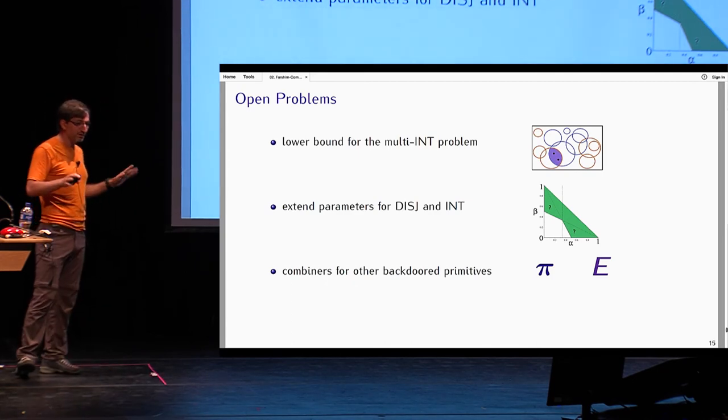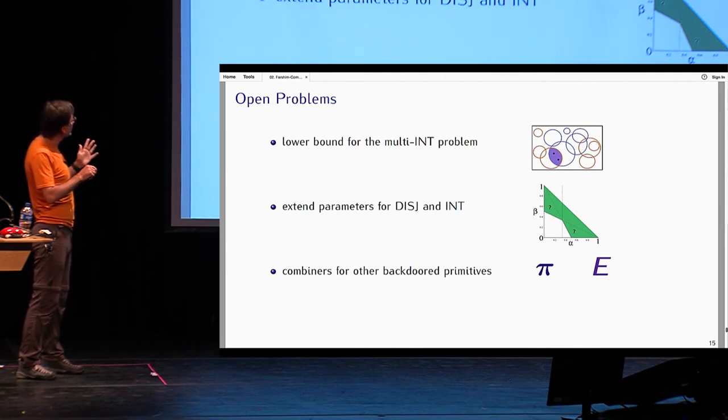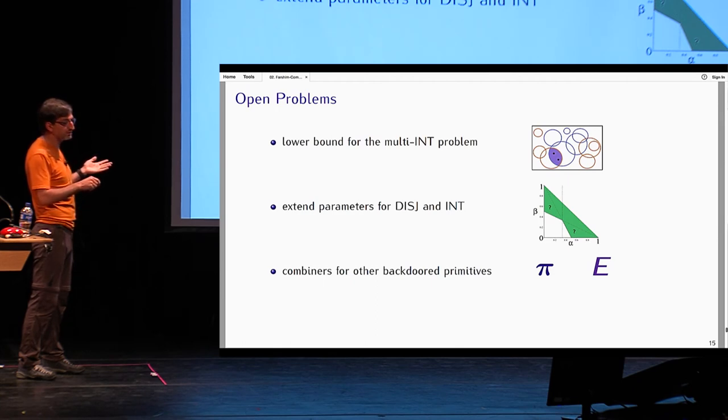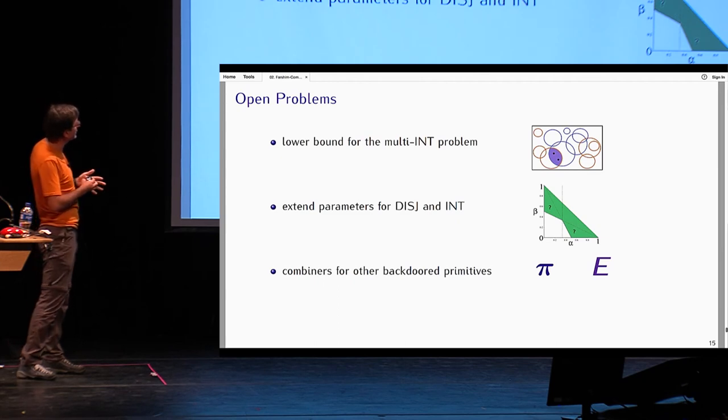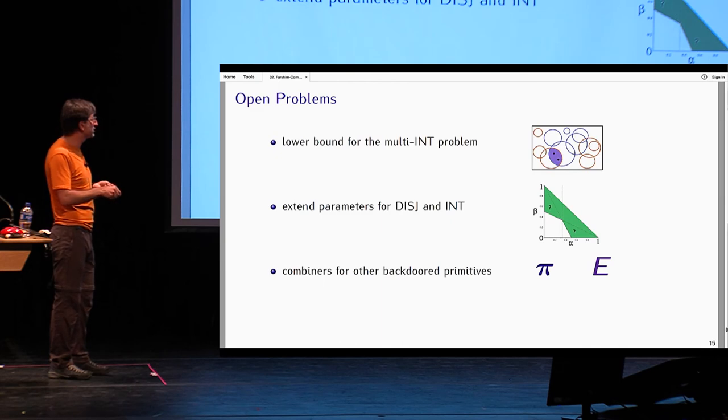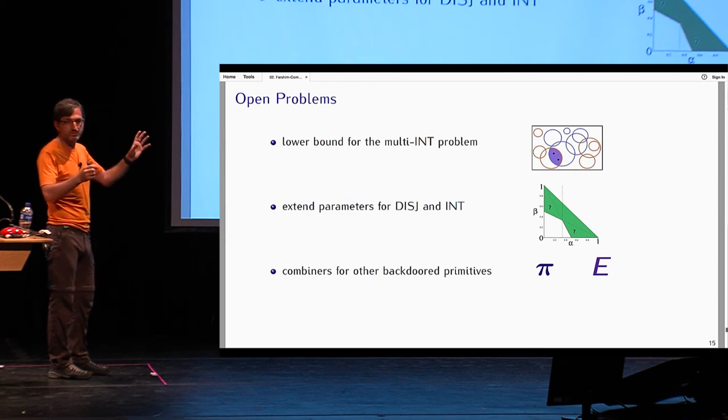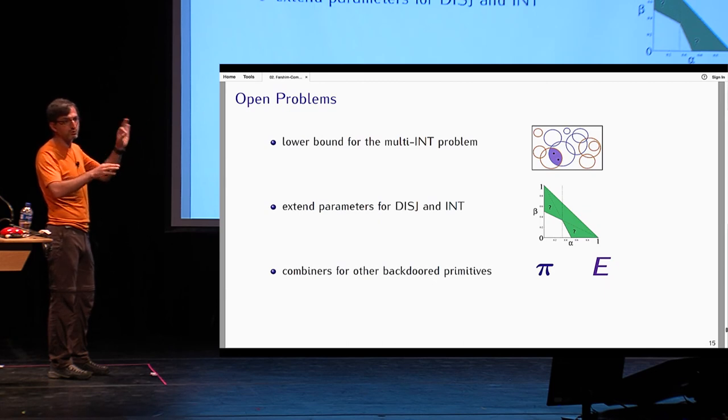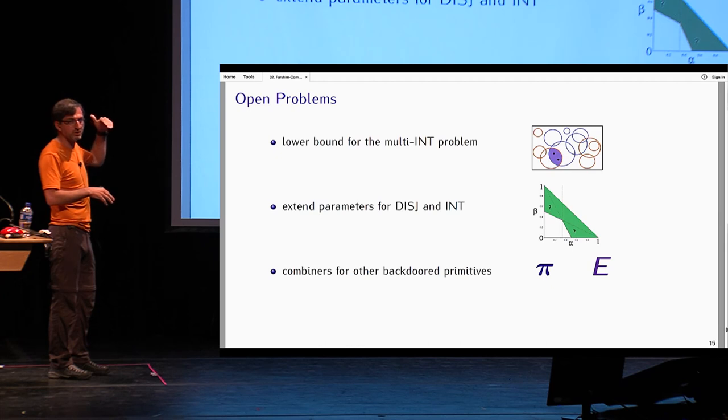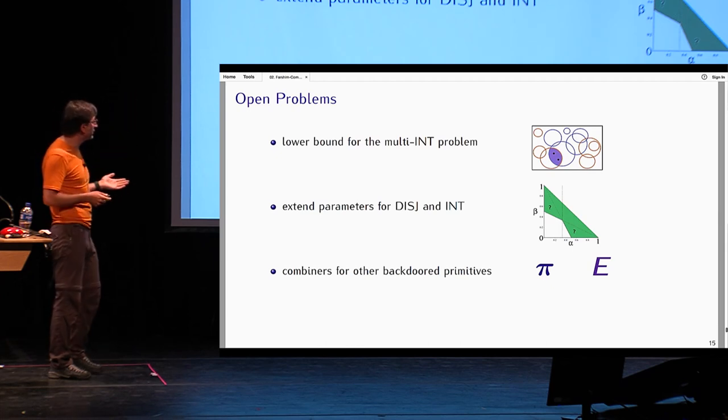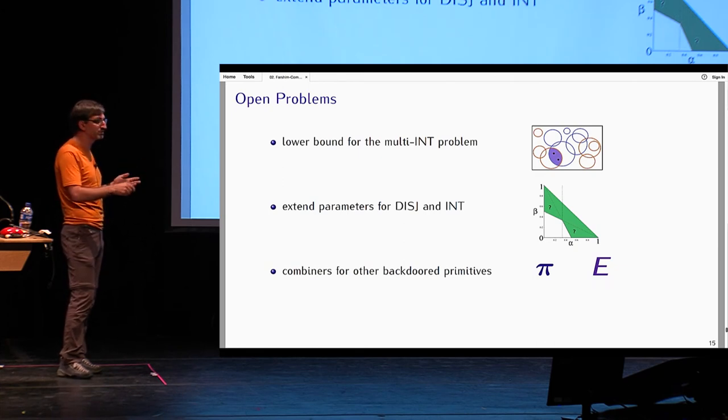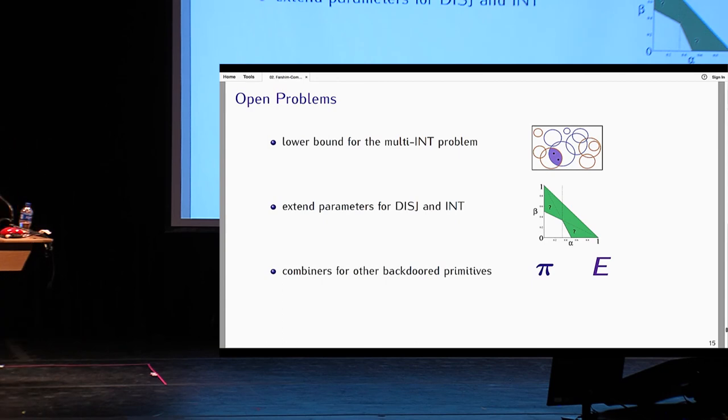Let me end. I'm way ahead of the time, but that's fine. Let me end with some open problems. There are quite a number of open problems. One is to find a lower bound for this collision problem, the multi-instance version of the set intersection problem. The other, which is quite important from a cryptographic perspective because it will give rise to better concrete security, is to extend this range of parameters for which the set intersection and set disjointness are hard, both in terms of the size of the sets and also the protocol error. We have 99%, we want to extend that to any protocol error. And also, combiners for other primitives, for example, combiners for permutations or encryption.